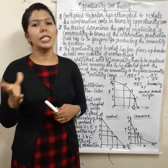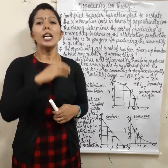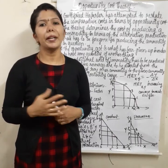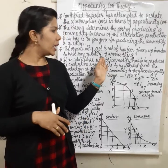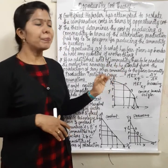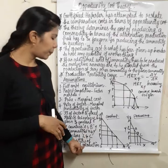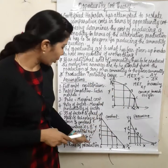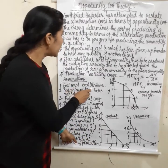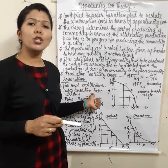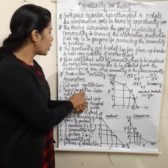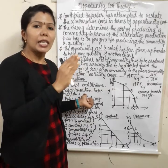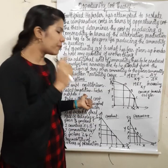This is explained by the production possibility curve, also called the transformation curve or production possibility frontier. Now the assumptions: assumption one is full employment equilibrium in the economy.